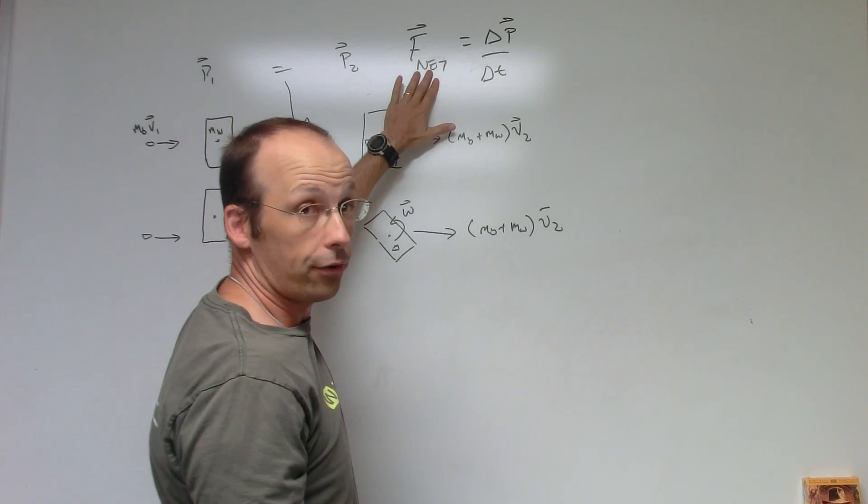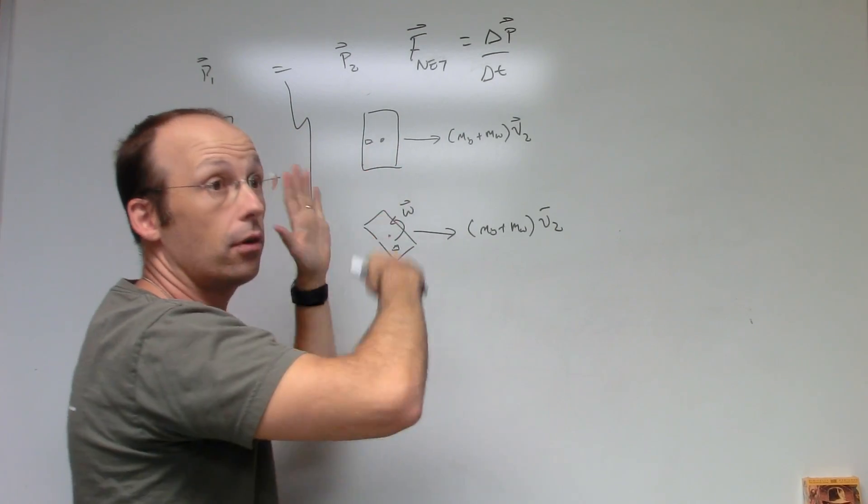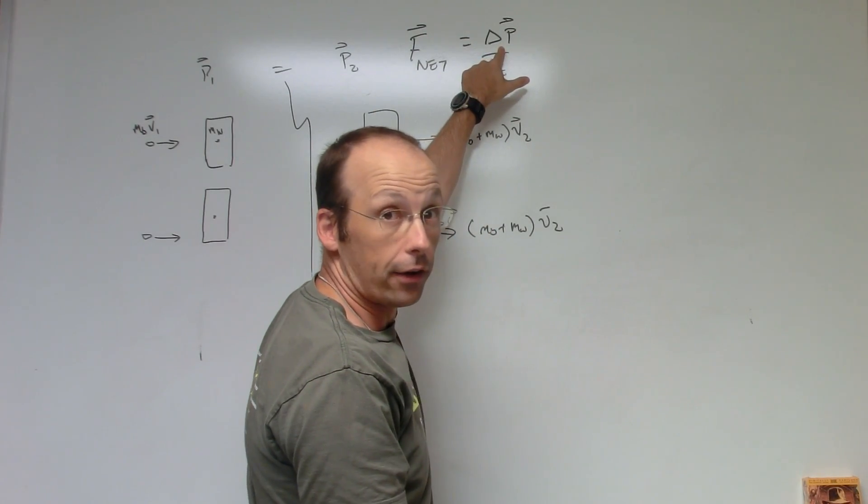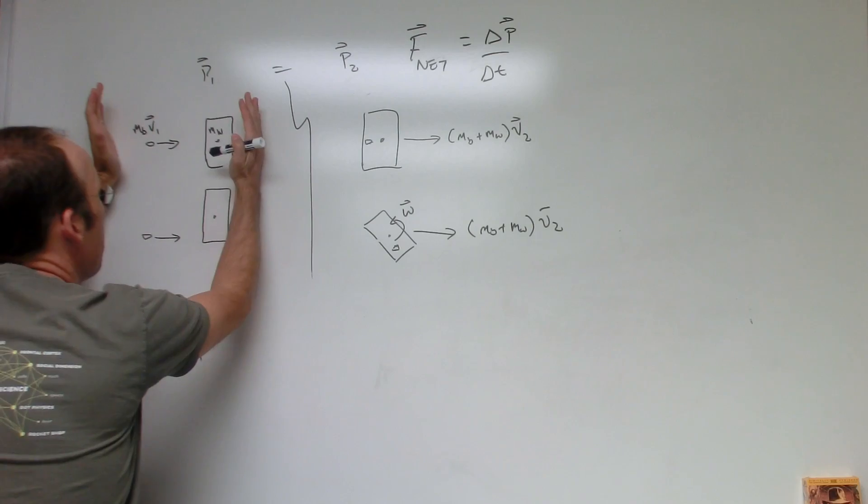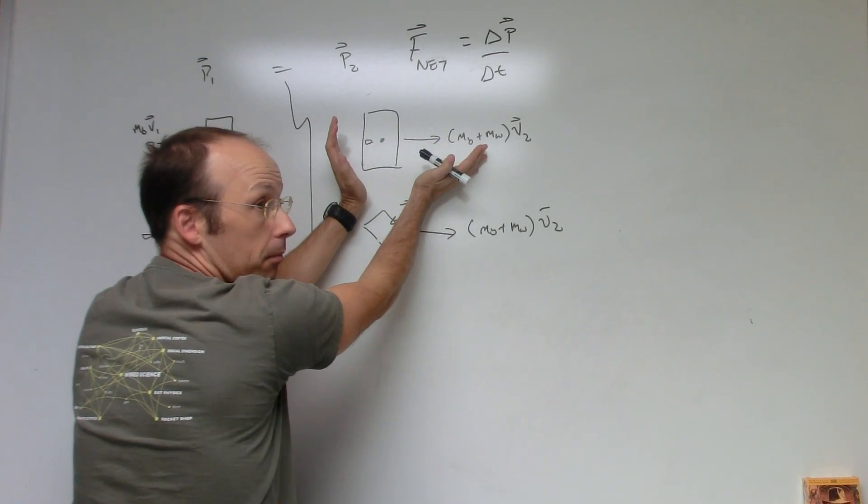It says the total force on that system is the change in momentum over change in time. Now, there's no net force on it. The bullet pushes on the block, but there's no net external force. So this says the change in momentum has to be the zero vector.